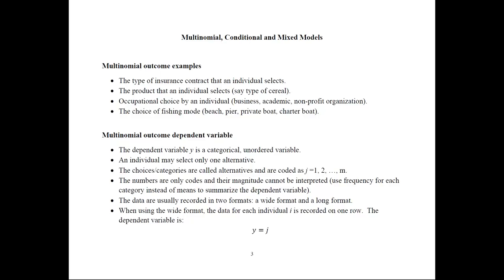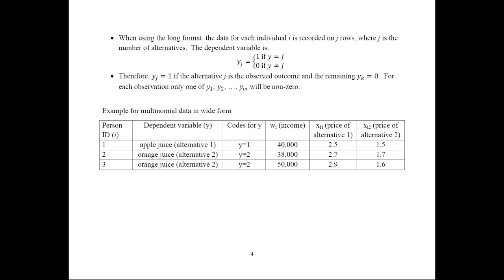The data is usually recorded in two formats: a wide format or a long format. In the wide format, the data for each individual i is recorded on one row, and the dependent variable is Y equals J, where J is 1, 2, 3, 4, and so on. In the long format, the data for each individual i is recorded on J rows, where J is the number of alternatives. The dependent variable Y equals 1 if Y equals J, and 0 if Y does not equal J.